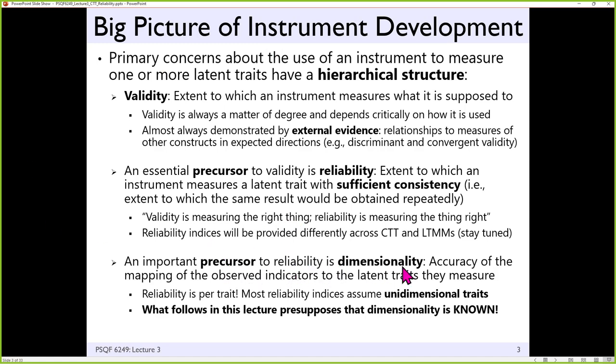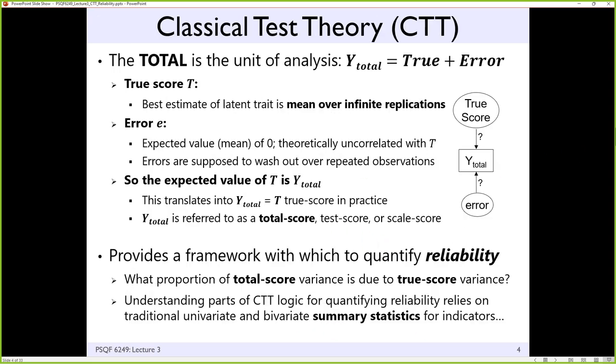Reliability assumes some kind of known dimensionality of the items — that you know these items all measure one thing, or that these items measure this one thing and these items measure a second thing. That will be step one in the analysis: to see if we're actually right about that, and to use the empirical evidence to refine our predictions as needed. In that sense, it straddles the line between exploratory and confirmatory hypothesis testing. So when we're adding things up and computing some kind of reliability coefficient, we are presupposing that we're measuring one thing. Otherwise, it doesn't make sense to add them together. Starting with classical test theory.